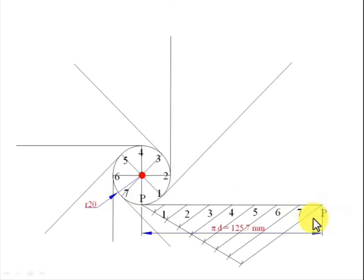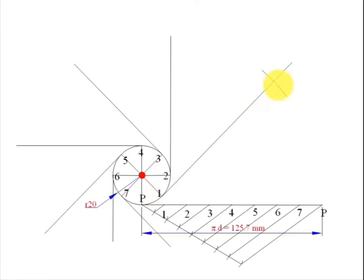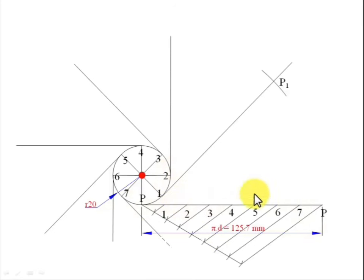Now keep track of point P as you wind the string along the circumference of this circle. When the string portion up to point 1 comes into contact with the circle, the remaining length is from 1 to P. With 1 as center, cut an arc — this gives point P1. Similarly, when wound to point 2, with 2P as radius and 2 as center, cut an arc to get P2. Continue: from 3 to P with 3 as center gives P3; from 4 to P with 4 as center gives P4.